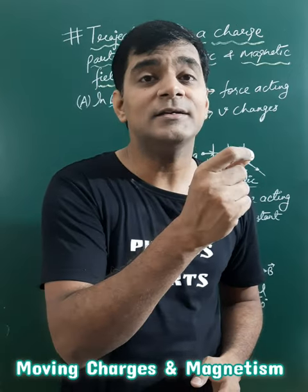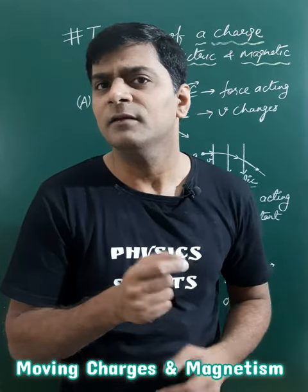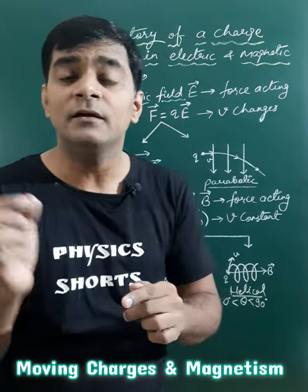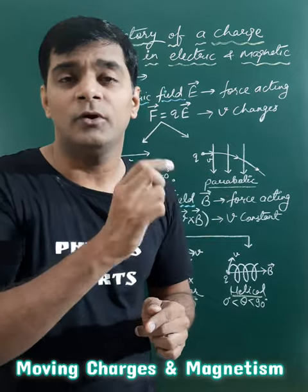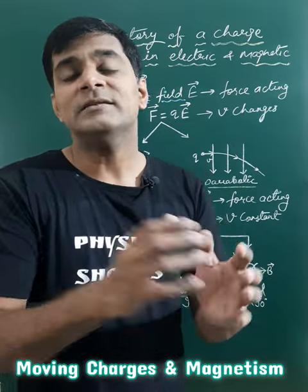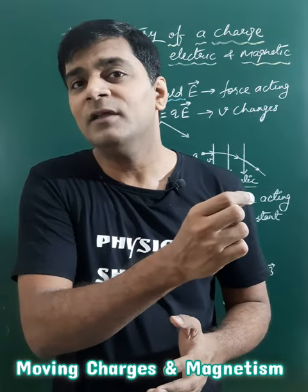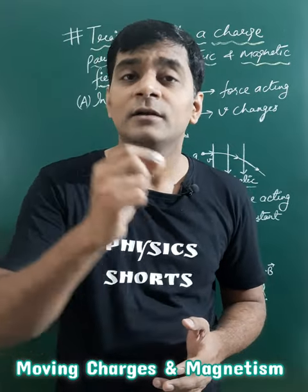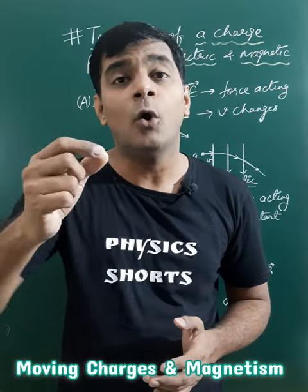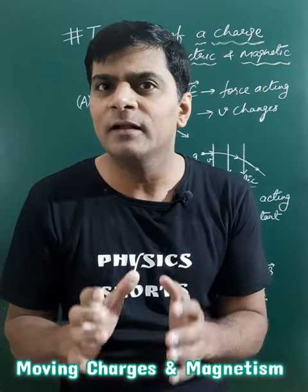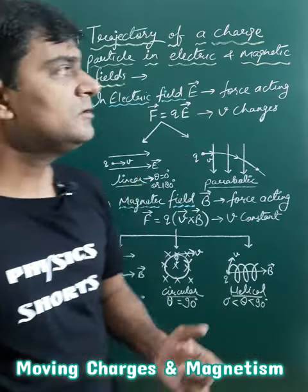When a charged particle enters an electric field, its trajectory may be linear or parabolic. When it enters a magnetic field, its trajectory may be linear, circular, or helical, depending on the angle.